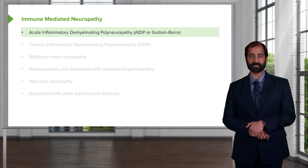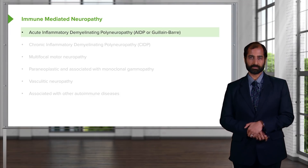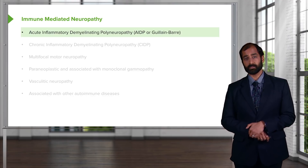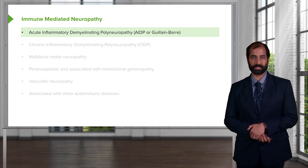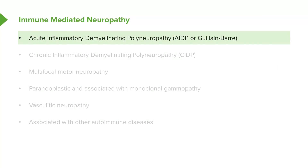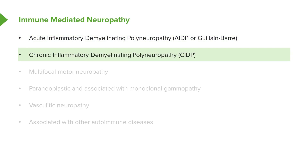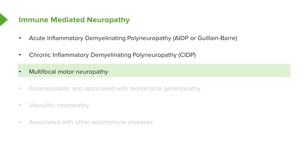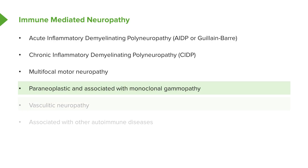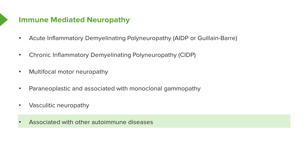If it's immune-mediated, I want to make sure you're very clear on how to identify Guillain-Barré. This is an acute inflammatory demyelinating polyneuropathy, also known as AIDP. We will then go on to CIDP — chronic inflammatory demyelinating polyneuropathy. We'll also walk through multifocal motor neuropathies, paraneoplastic and associated monoclonal gammopathies, vasculitic neuropathy, and neuropathies associated with other autoimmune diseases.